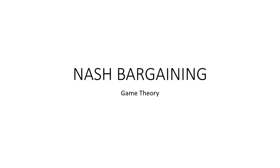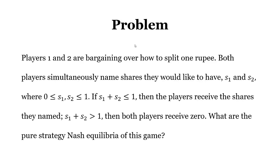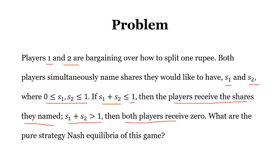Today we are going to do the Nash Bargaining Problem. This problem is very famous, also known as the PISA division problem. It came in the ISI entrance exam. In this problem, you need to divide one rupee between two players, player one and player two. Player one's share is s1 and player two's share is s2, and s1 and s2 must belong to the interval [0,1]. If s1 plus s2 is less than or equal to one, the players receive the shares they named. But if the sum is strictly greater than one, both players receive zero payoff.